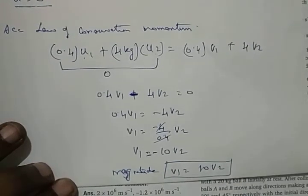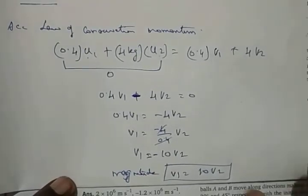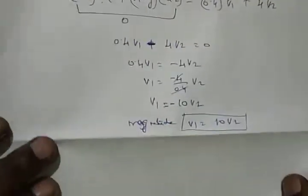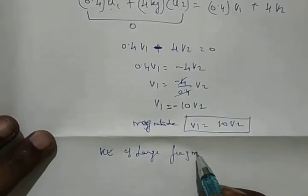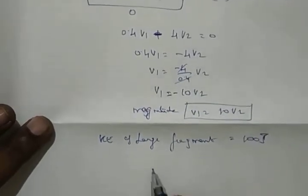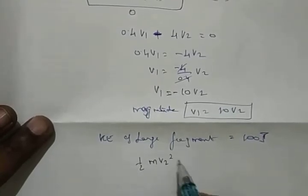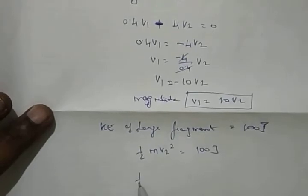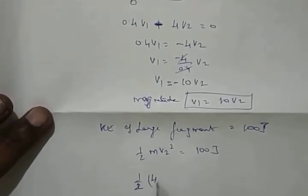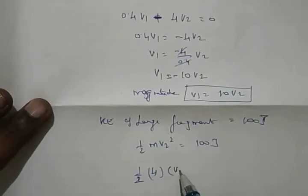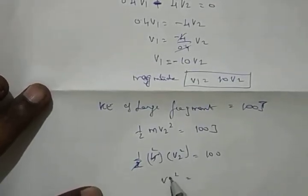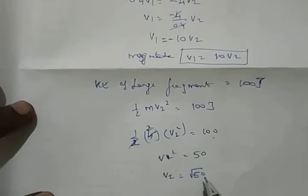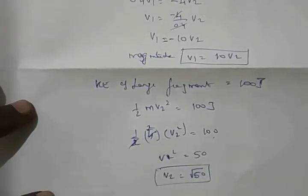Since V1 = 10·V2, we can find V2 using the kinetic energy of the large fragment: ½·M·V2² = 100 J, so ½·4·V2² = 100, giving 2·V2² = 100, V2² = 50, so V2 = √50 m/s. Then V1 = 10·V2 = 10√50 m/s.